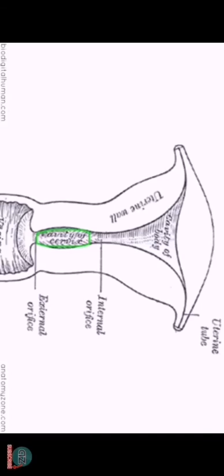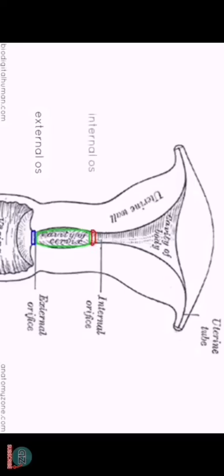Switching to a simple cross-section of the uterus, I want to show the cervical portion — the cervix of the uterus. It's outlined here, and it's this narrow inferior portion. Where it opens up into the vagina, it's called the external os — so you've got this external opening into the vagina. And where it opens up into the uterine cavity above, it's called the internal os.